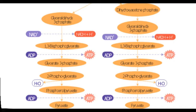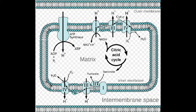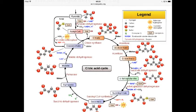The mitochondrion has an outer and an inner membrane. There is an intermembrane space, and inside the inner membrane is called the matrix. The pyruvate from glycolysis goes into the matrix, where the citric acid or Krebs cycle takes place.